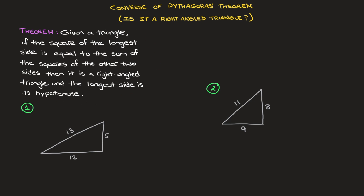That's a bit long and maybe a little difficult to digest, so let me go ahead and illustrate that. It's important to establish that our starting point in this case is a triangle, and not necessarily a right-angled triangle. Looking at the triangle I've just drawn here, the longest side length is this side length here, so I'll call that C. I'll name the other two side lengths A and B. This theorem is telling us that if C squared equals A squared plus B squared, then this triangle is a right-angled triangle, and its hypotenuse is the longest side length C.